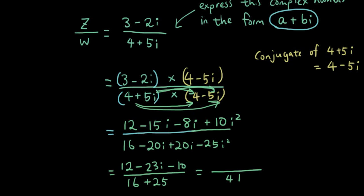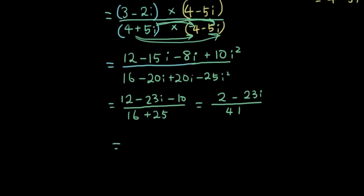So that becomes 2 minus 23i over 41. Now, as you guys should know, with fractions, you can split up the fraction into two by keeping the denominator equal. So it's 2 over 41, that's a 1 not an i, 2 over 41 minus 23i over 41.